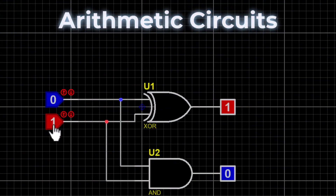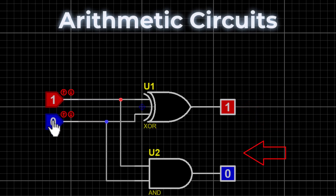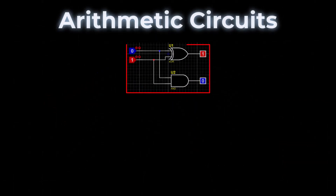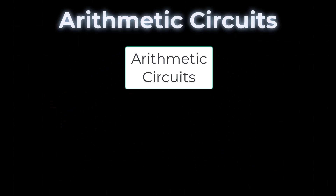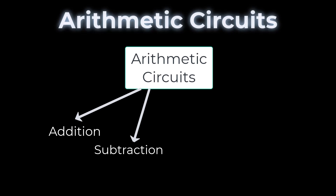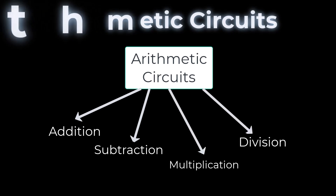An arithmetic circuit is a set of gates with a separate set of inputs for each number to be processed. The gates are connected to carry out an arithmetic action, and the outputs of the gate circuit are the digits of the result — addition, subtraction, multiplication, or division.